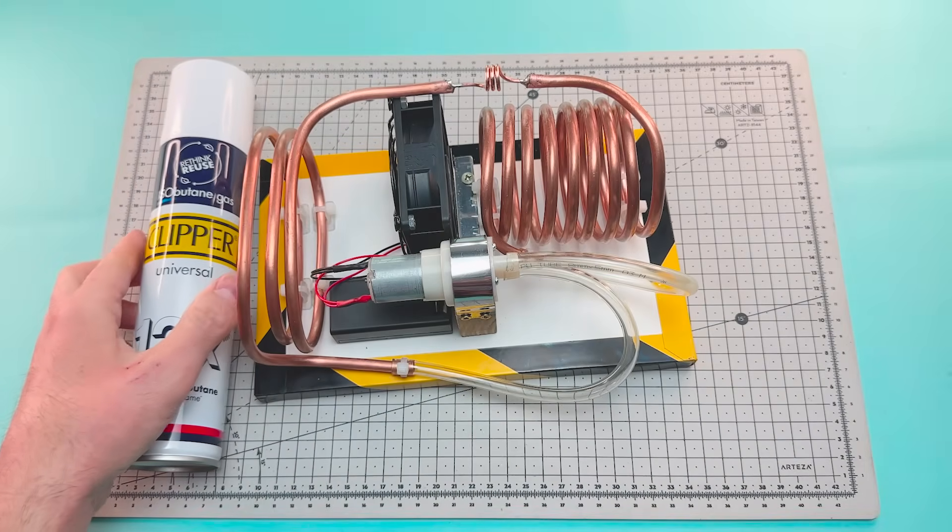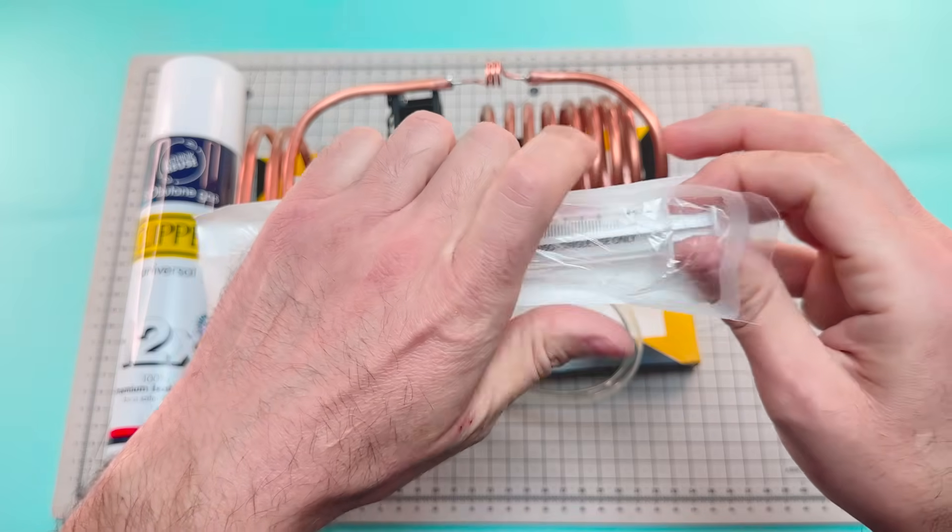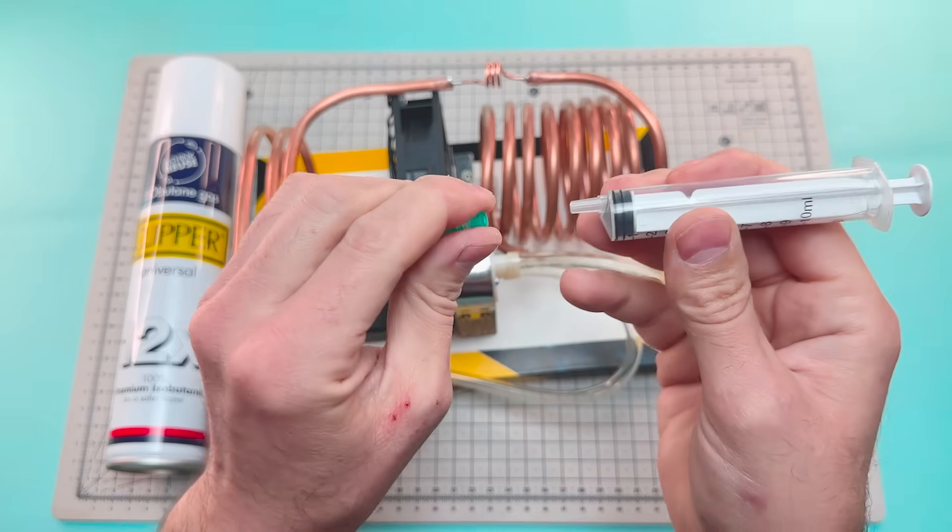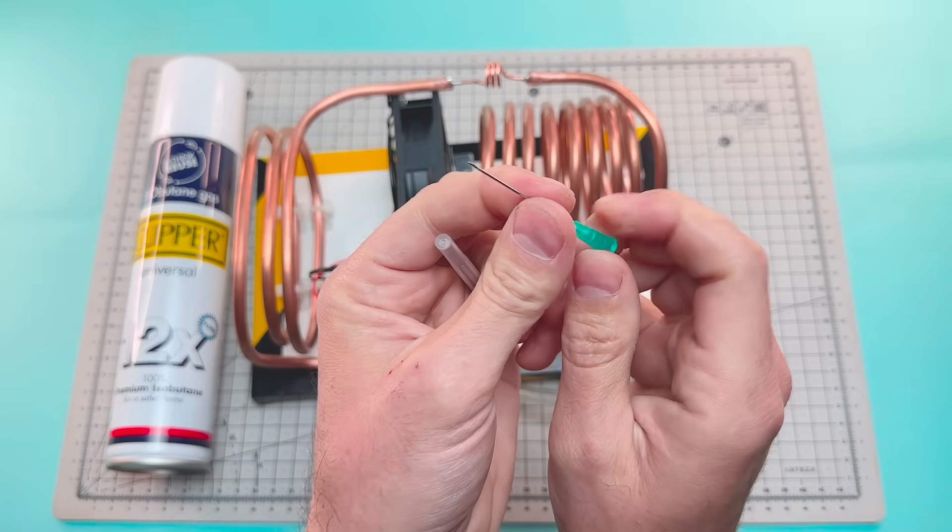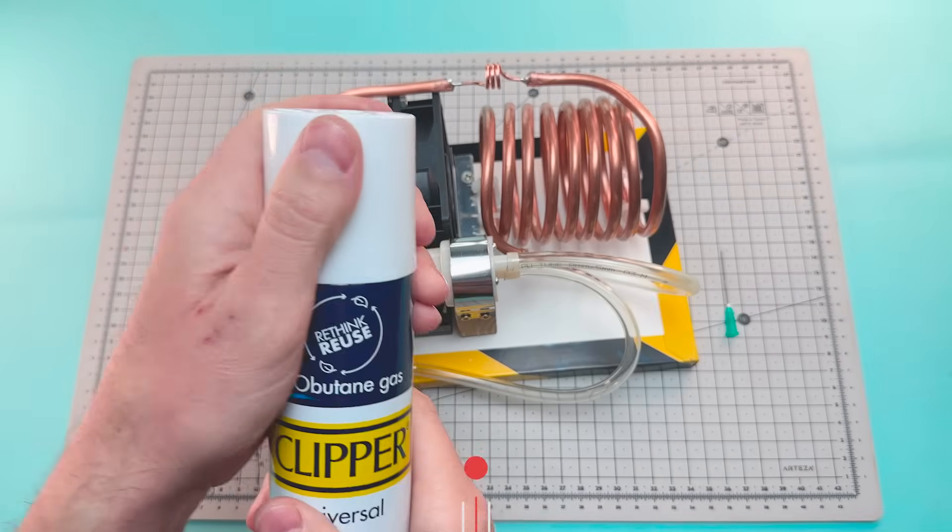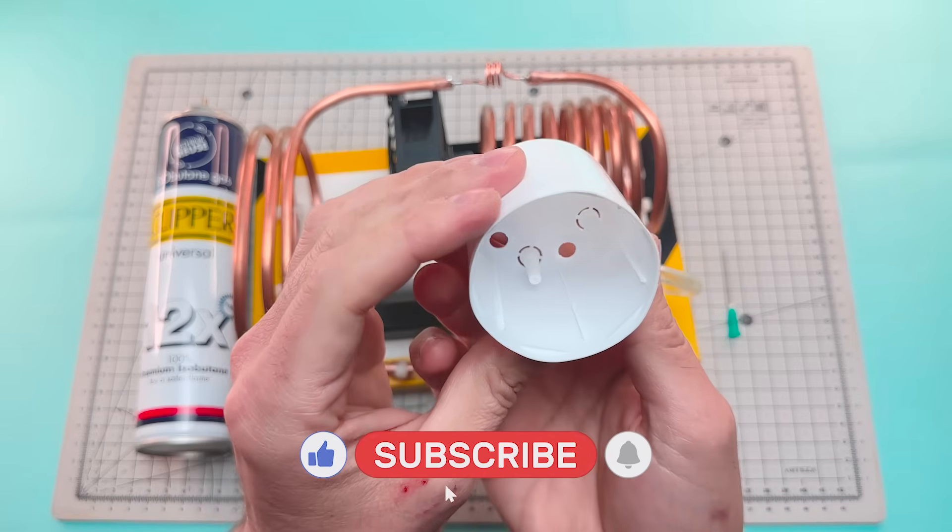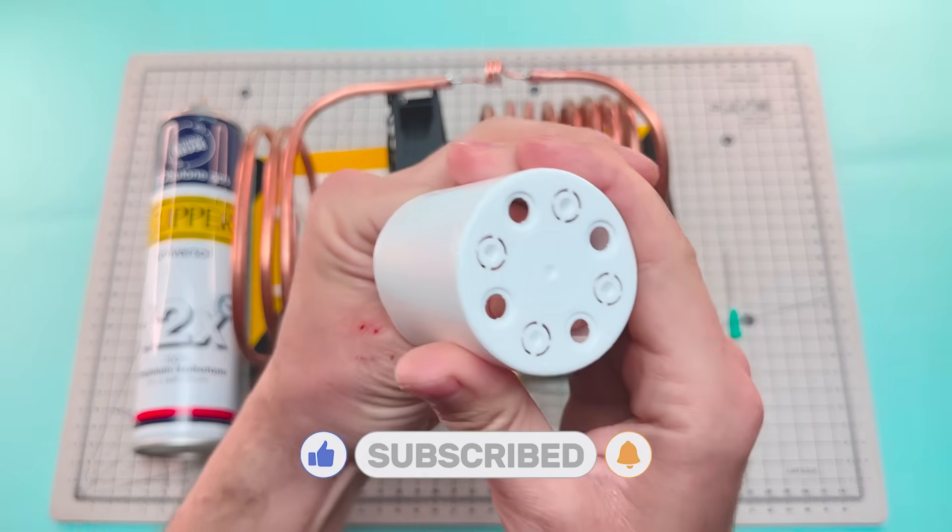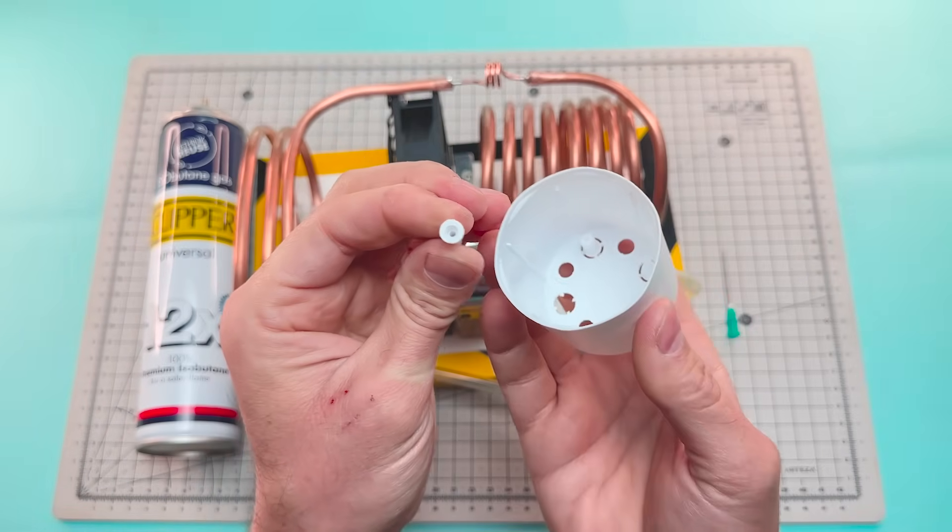We'll use a syringe to inject the gas into the circuit. When isobutane changes from liquid to gas, it needs energy to do so. And that energy is drawn from the heat in the surrounding air. That heat transfer is what cools the system.